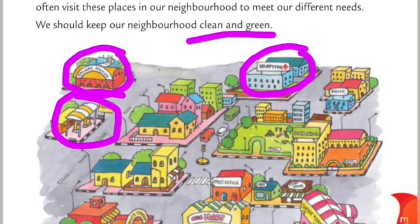Next picture hai post office ka. Post office mein hum letters, parcels, money orders — yeh sab kaam ke liye jaate hai. Letters post karne, letters receive karne ke liye. Hum stamp buy karte hai, wahaan se envelopes buy karte hai, aur humare letters bhi wahaan se post kar sakte hai.